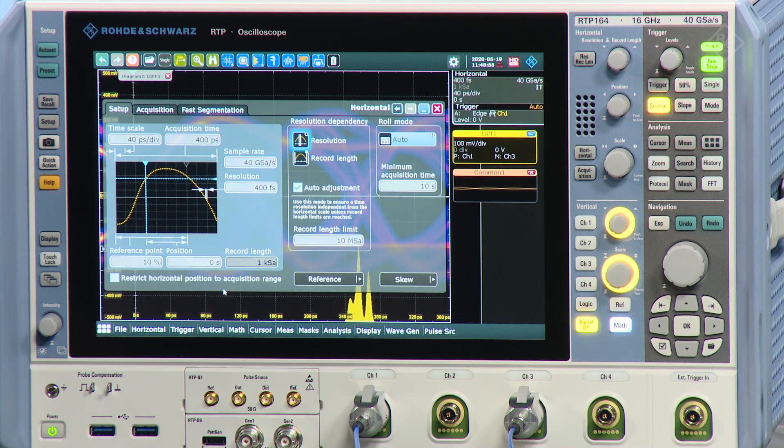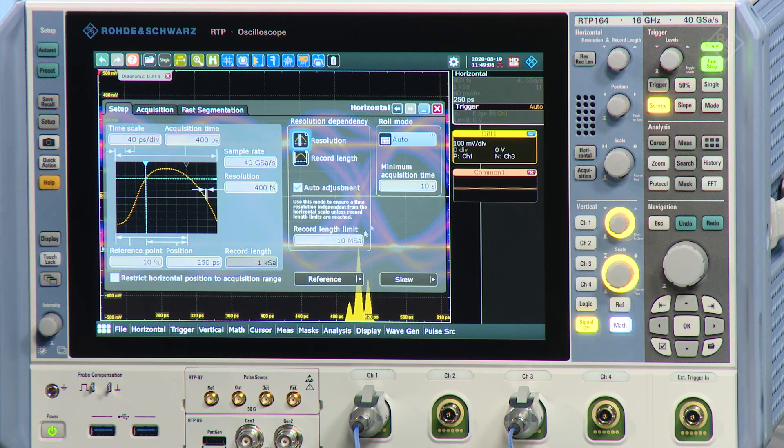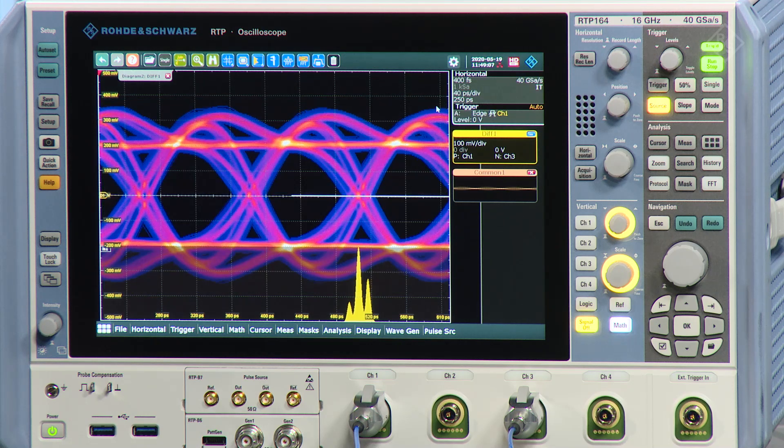And let's take two UIs, which is 250 picoseconds, adding that as a shift. So once I've done that, I moved the trigger point to the left. And now I see the eye pattern here. But now I see the problem that the histogram changed.